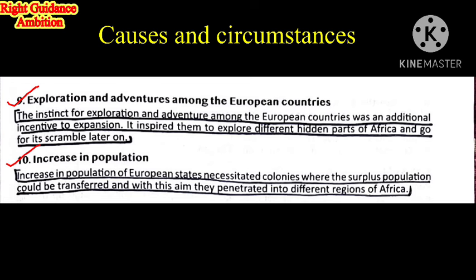Ninth point: Exploration and Adventure. Among the European countries, the extent for exploration and adventure was an additional incentive for expansion. The European countries wanted to expand and explore new things — new raw materials, new cultures, and new languages. They considered themselves very civilized and literate people who wanted to explore the world. This inspired them to explore different hidden parts of Africa, open trading posts and centers, and slowly colonize the continent.